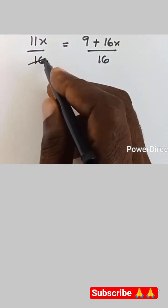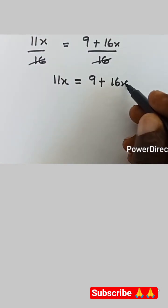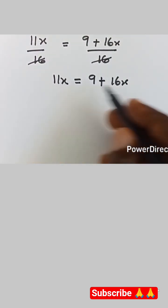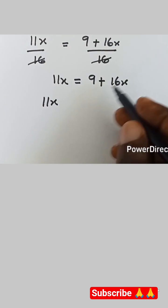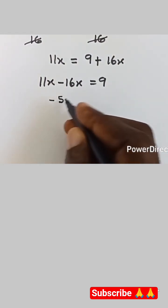The denominators are the same—we have 16 and 16—so we can cancel them out. Then we have 11x equals 9 plus 16x. Let's bring the 16x and 11x together because they are like terms. So we have 11x minus 16x equals 9.